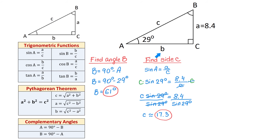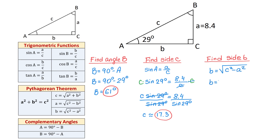What we have left is to find side B. Now that we have found angle B and hypotenuse C, we can use the Pythagorean theorem formula B equals the square root of C squared minus A squared. Replacing C with 17.3 and A with 8.4, we get 17.3 squared minus 8.4 squared. Using a calculator, B is approximately 15.1 units.